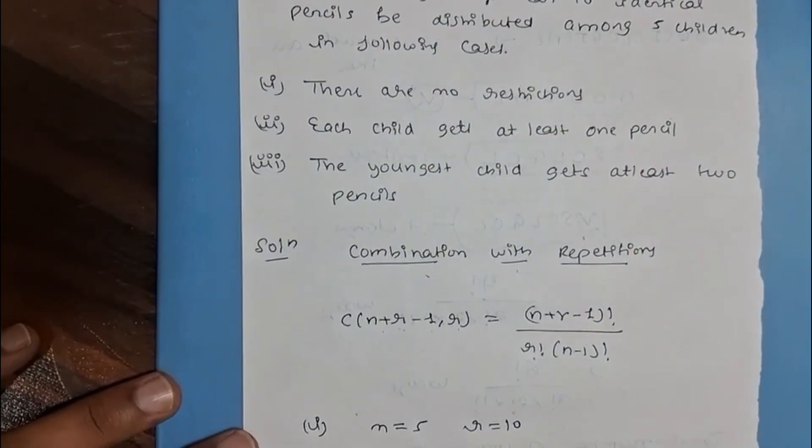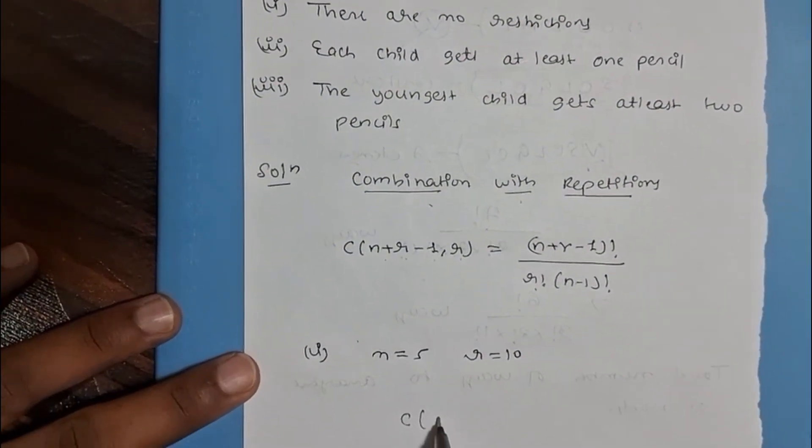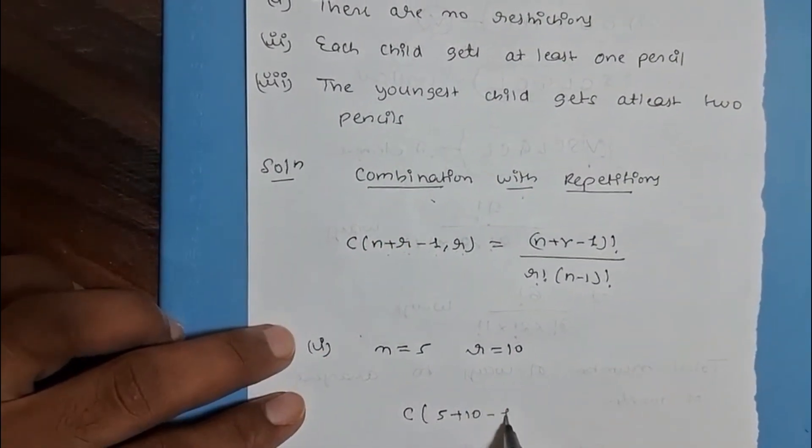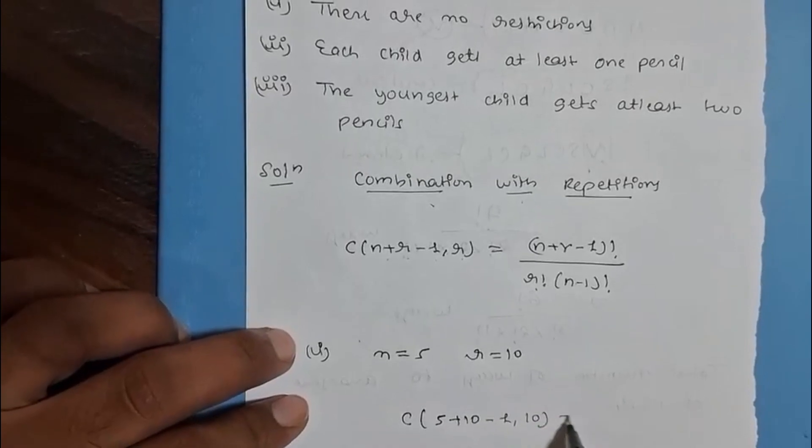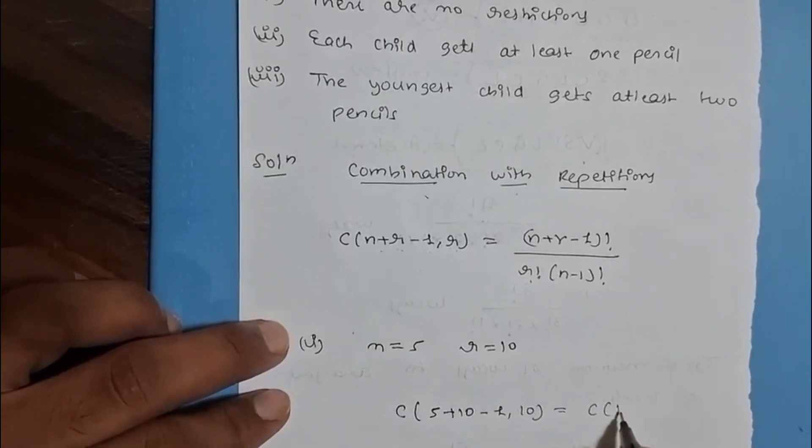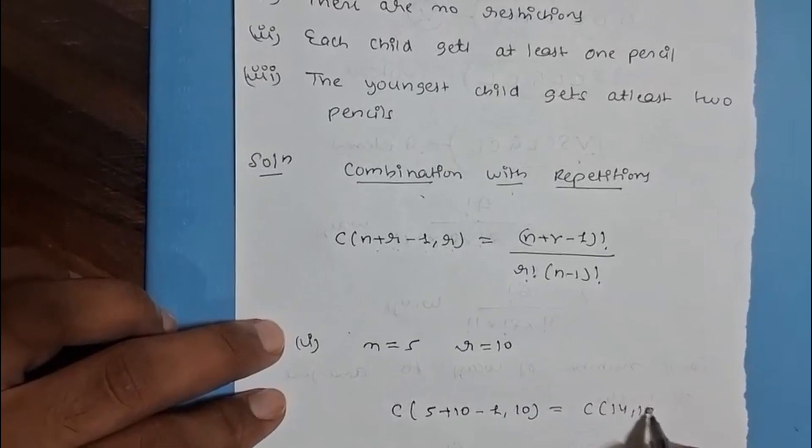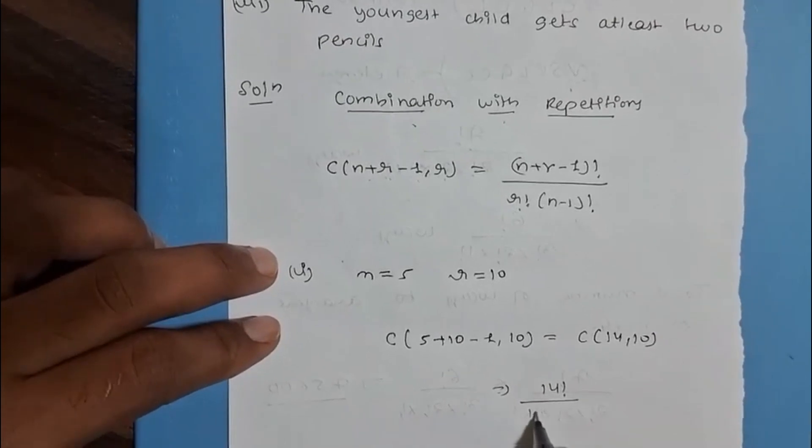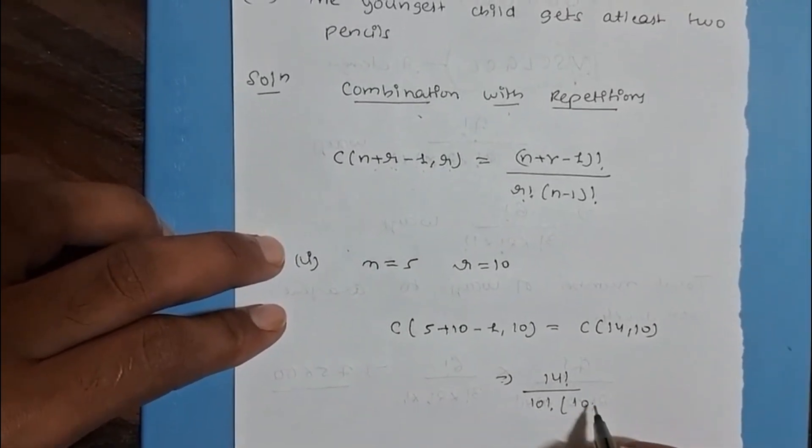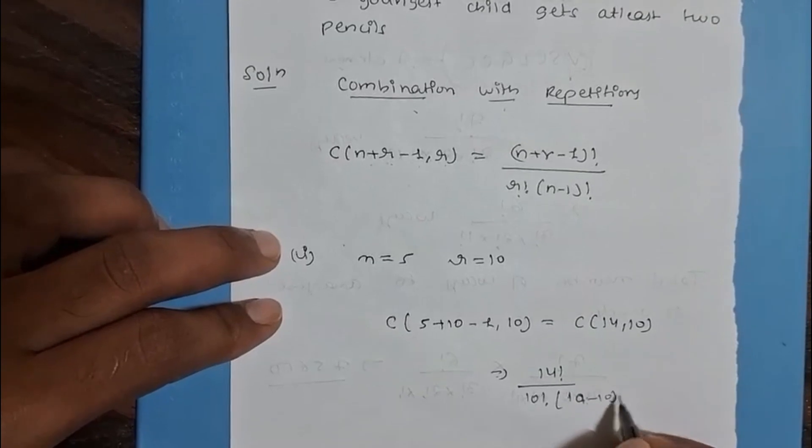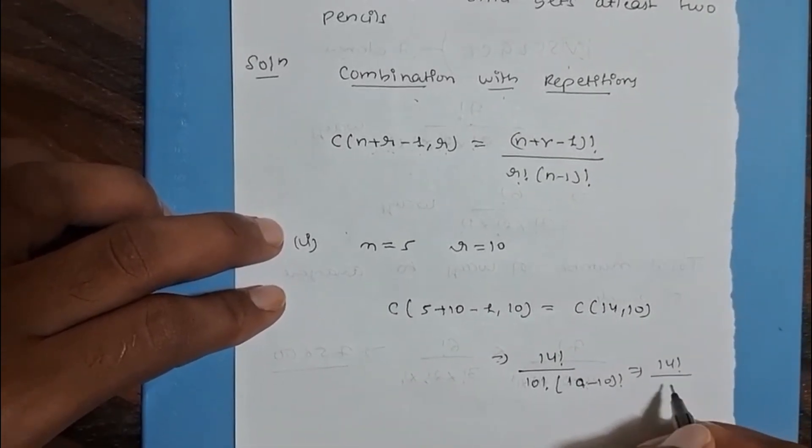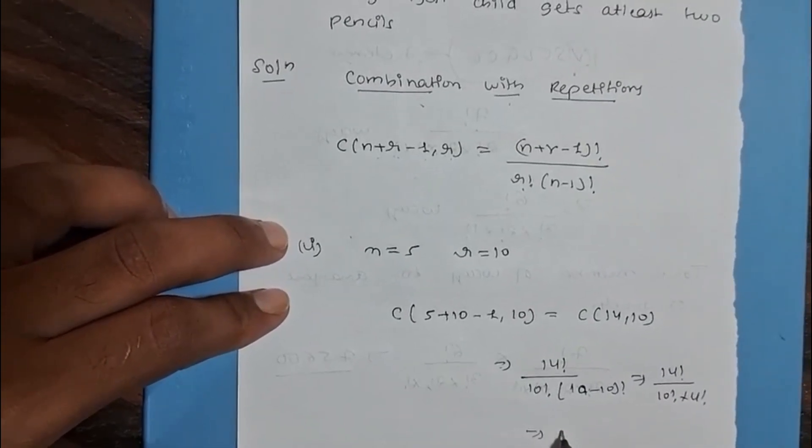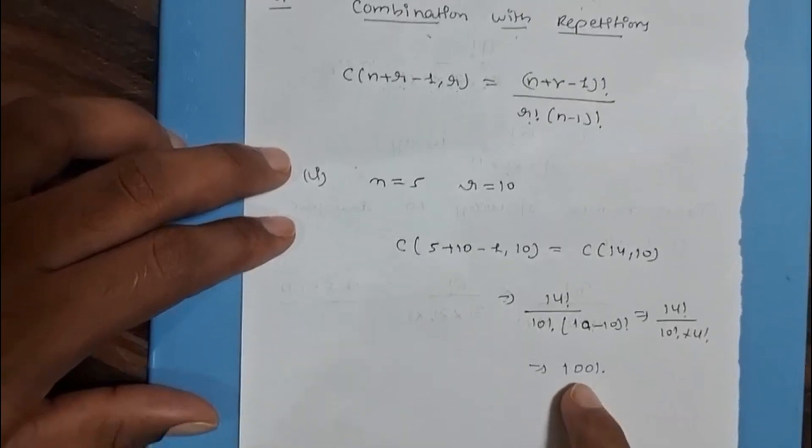The formula is C(5+10-1, 10) = C(14, 10) = 14! / (10! × 4!). So it will come to 1001. This is our first part.